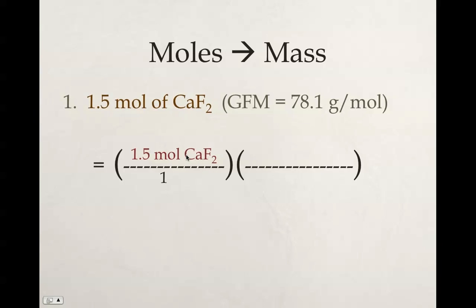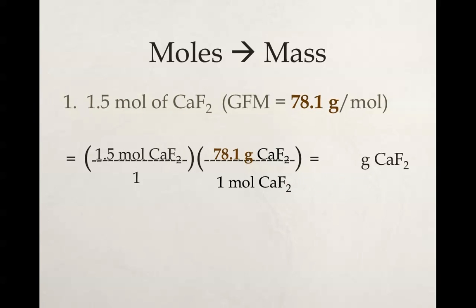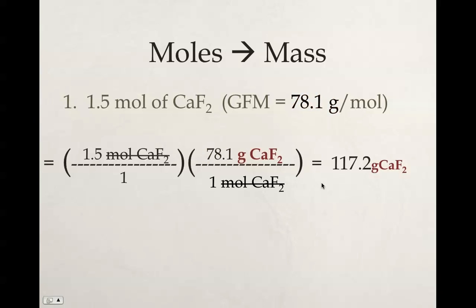Because we have moles of calcium fluoride, we need our 1 mole of calcium fluoride to go in the bottom. That is equal to the GFM of calcium fluoride, which is 78.1 grams of calcium fluoride. We multiply across the top and divide by the bottom. So 1.5 times 78.1 is going to get 117.2. Whatever unit is left up in the numerator is our unit for our answer. So 1.5 moles of calcium fluoride would weigh 117.2 grams.